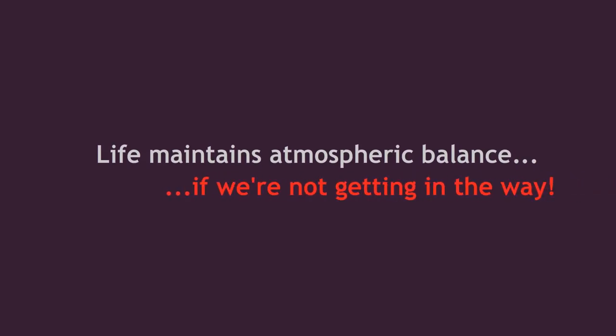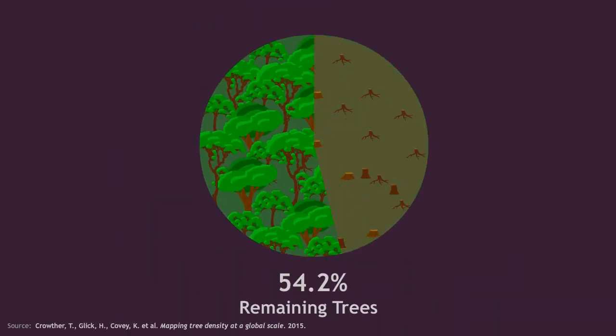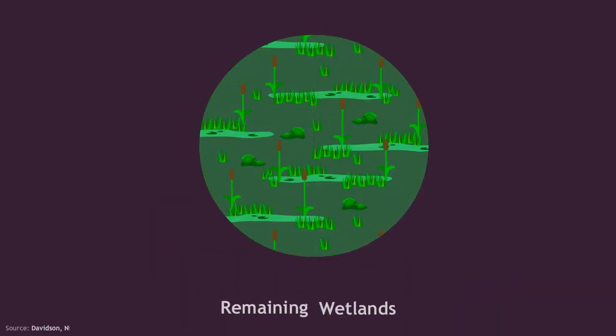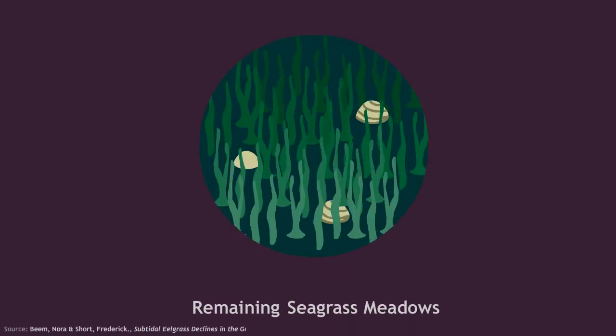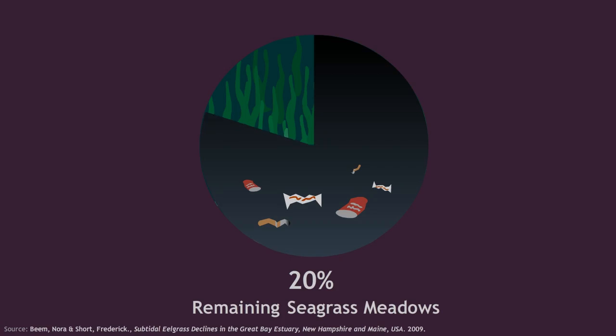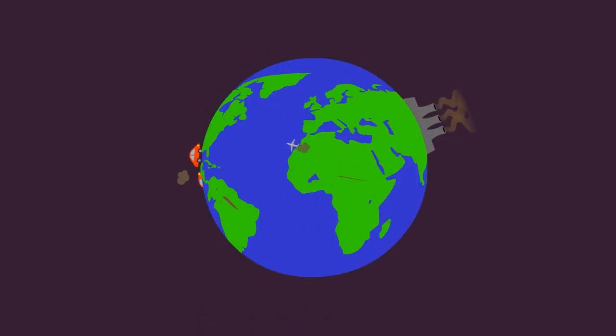Unfortunately, we're getting in the way. Today, I think we have something like half of the trees that we had before civilization. Half of the mangrove swamps of Asia have been destroyed. Eighty percent of the seagrass meadows on the New England coast are gone. We have rising emissions, and these organs of Gaia that maintain a healthy carbon cycle have been destroyed.